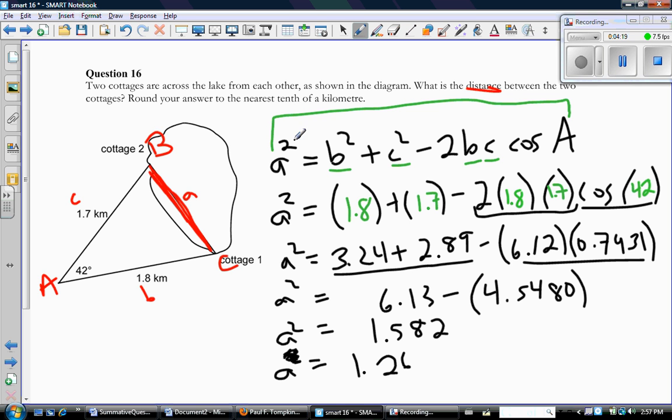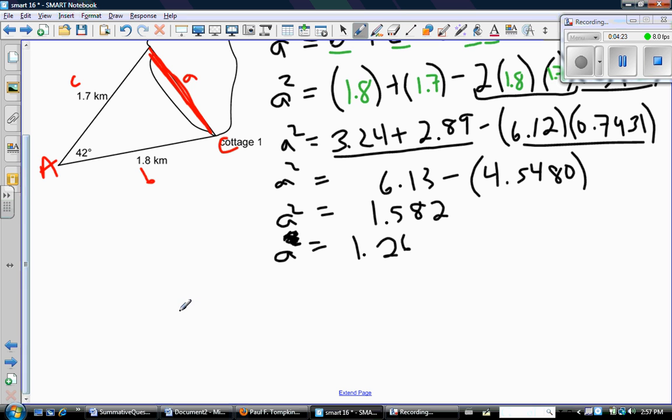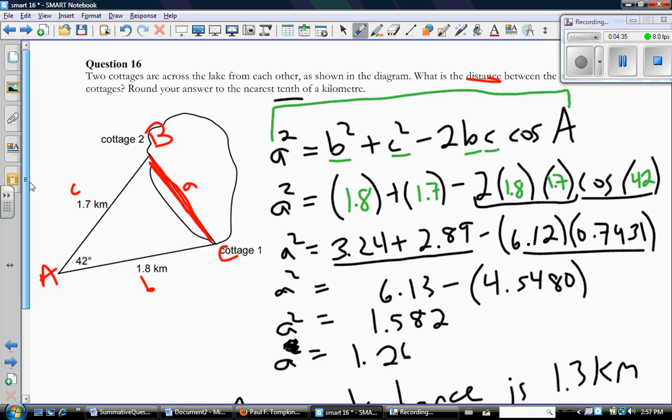And it said to the nearest tenth of a kilometer. So, I would say, therefore, the distance between cottage 1 and cottage 2 is 1.3 kilometers. And when I look at my diagram, that certainly seems like a reasonable answer.